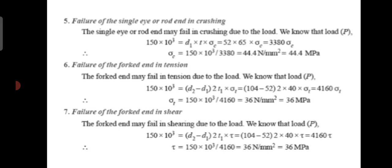Failure of the fork end in shear. The fork end may fail in shear due to the load. The formula is P equal to (d2 − d1) × 2t1 × tau. Substituting P equal to 150 × 10³, d2 equal to 104, d1 equal to 52, and t1 equal to 40, we get tau equal to 36 N per mm², that means 36 MPa.